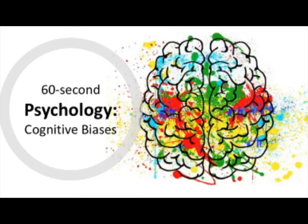Another common bias that is used in advertising is authority bias. This is when we are more likely to accept and recall information from someone that we perceive to have an amount of authority. For example, when advertisers use dentists to promote toothpaste.